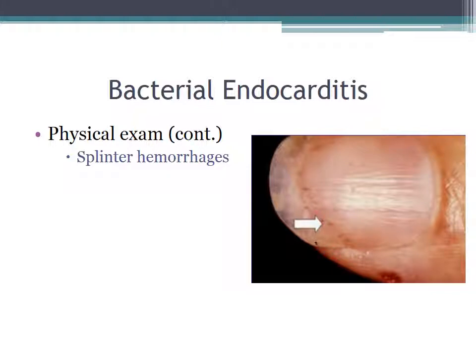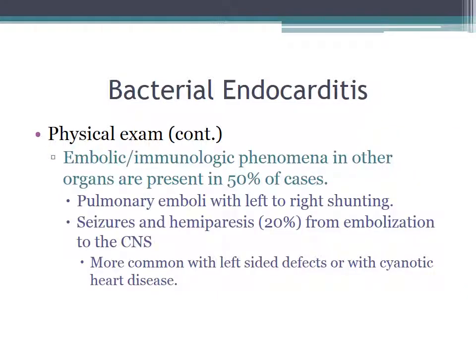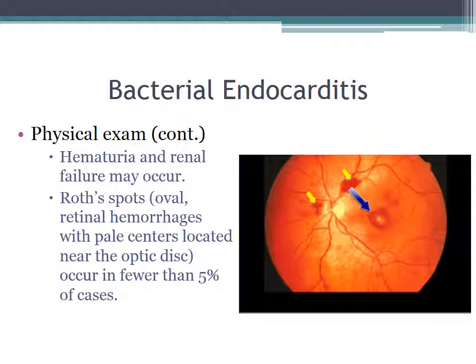Splinter hemorrhages is another physical exam finding to be aware of with bacterial endocarditis. Embolic or immunologic phenomena in other organs are present in about 50% of cases. Pulmonary emboli with left-to-right shunting is one example. Seizures and hemiparesis are seen in about 20% of cases from embolization to the central nervous system, and are more common with left-sided defects or cyanotic heart disease. Hematuria and renal failure can occur. Roth spots — oval retinal hemorrhages with pale centers near the optic disc — occur in fewer than 5% of cases.